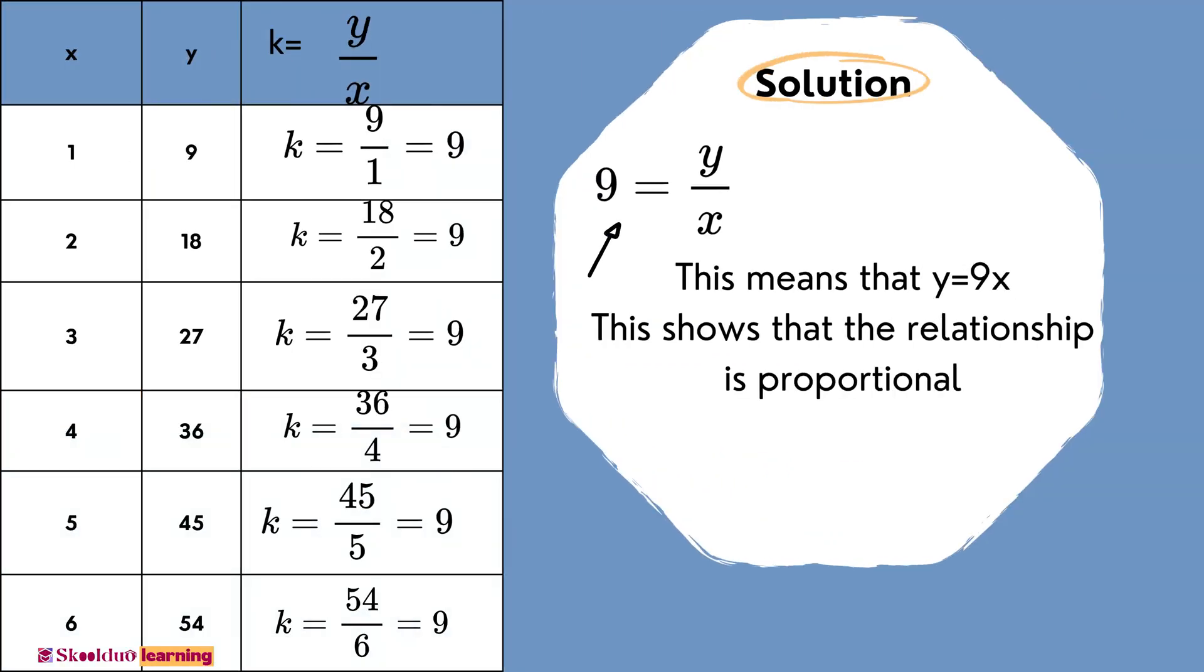K, which is Y over X, is equals to 9. This means that Y equals X. This shows that the relationship is proportional.